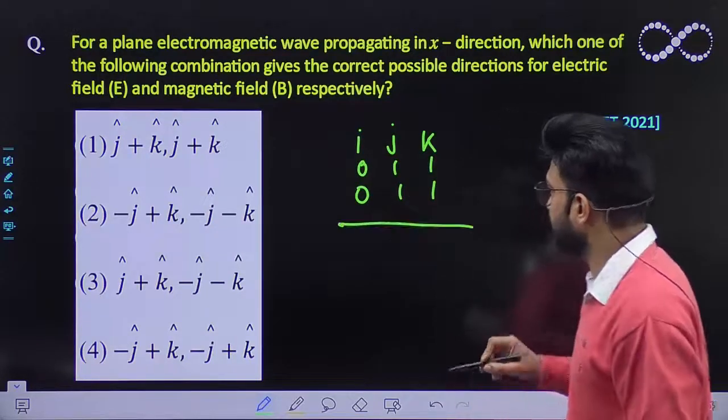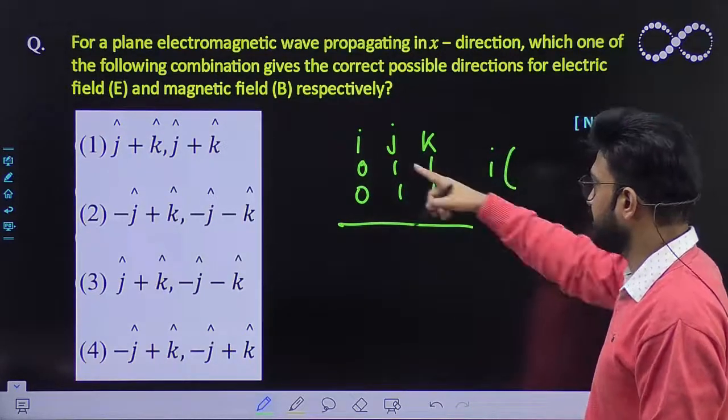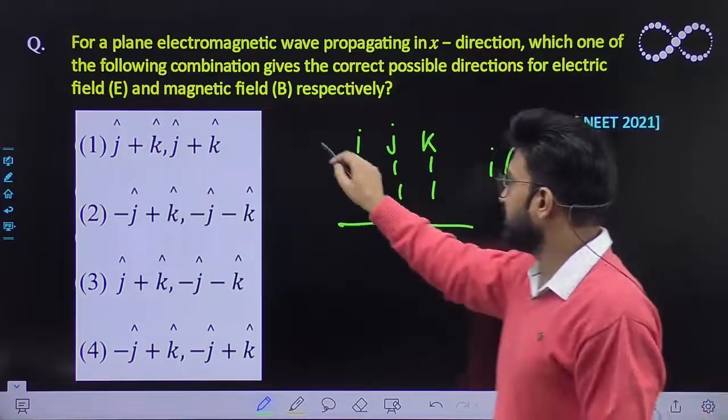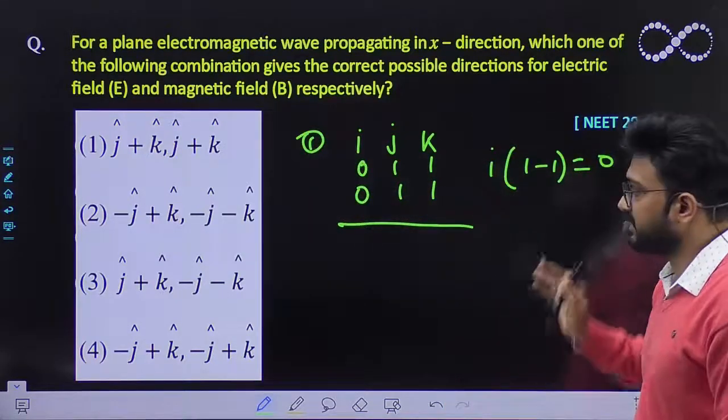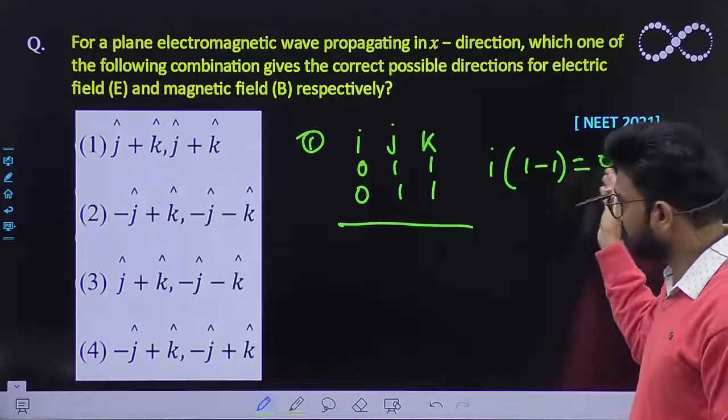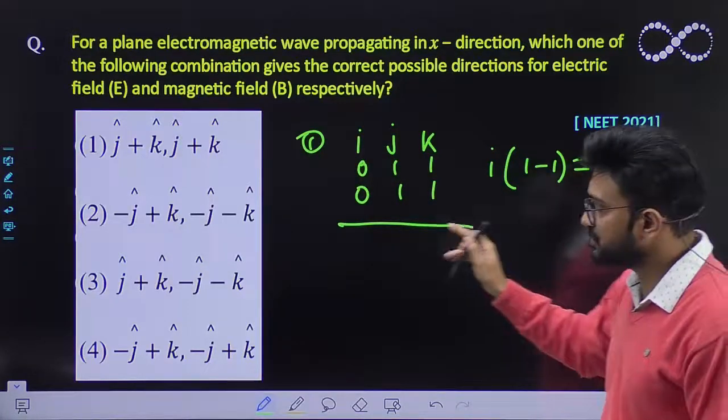What we are getting is i(1 minus 1). For the first option we are not getting any particular output. That means this option is wrong.